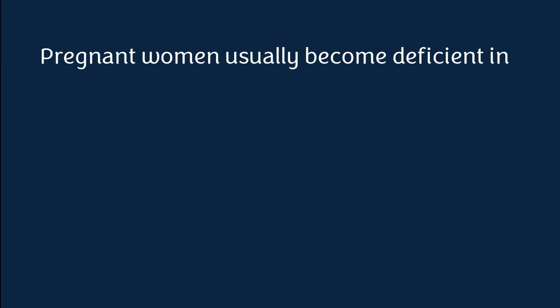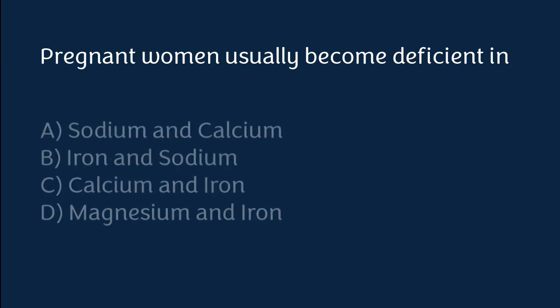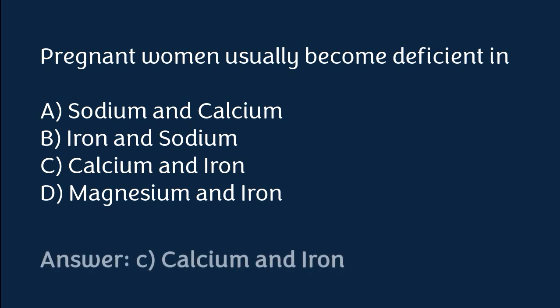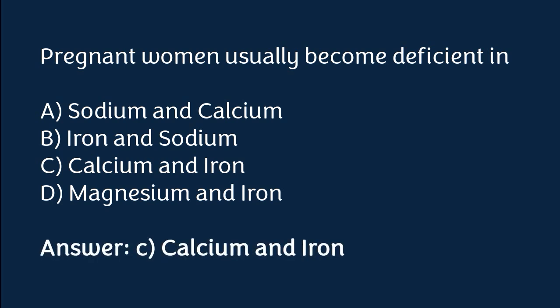Pregnant women usually become deficient in: sodium and calcium, iron and sodium, calcium and iron, or magnesium and iron. The correct answer is option C. Pregnant women usually become deficient in calcium and iron.